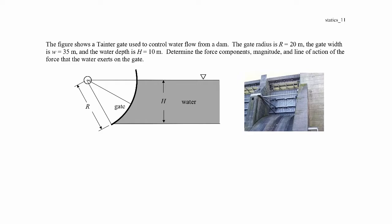Here we have a gate to hold back some water in a dam. This is called a tainter gate — basically a section of a cylinder. We're given that the radius is 20 meters and the gate width in and out of the page is 35 meters. We're holding back water at a depth h, which is right in line with the center of the gate. We're asked to find the force components, magnitude, and line of action of the water force exerted on the gate.